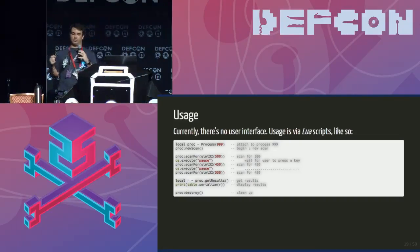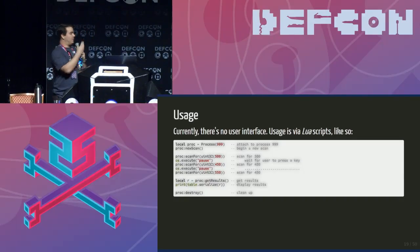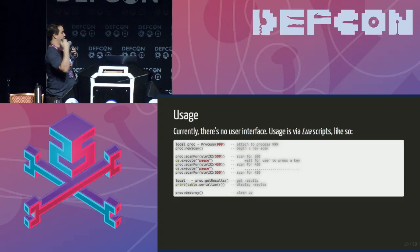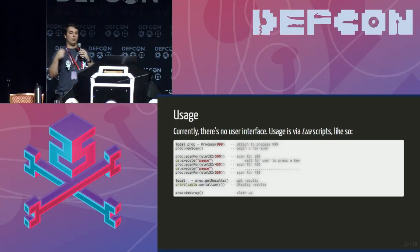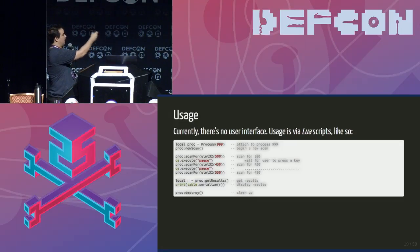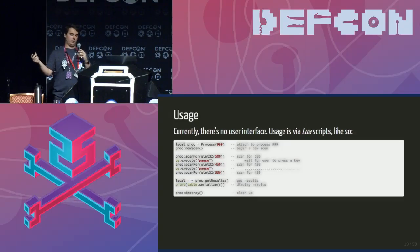There's no user interface. Instead of a UI to click through, you write code to do your scans. This code reflects the scan we went through in the diagram — it scans for 500, then 450, then 550, waiting for user input between each scan. Then it takes the results, serializes them to a table, prints them out, and you're done.